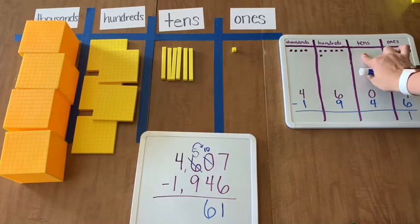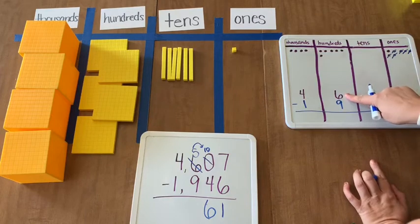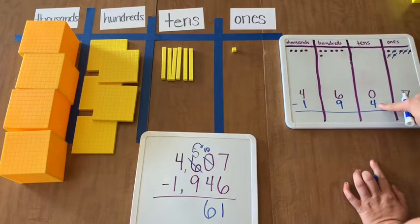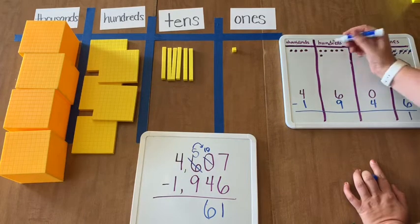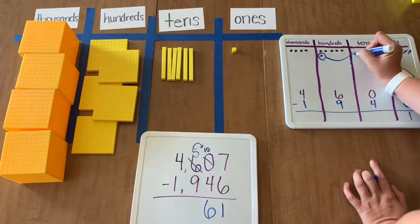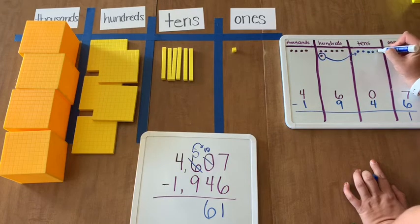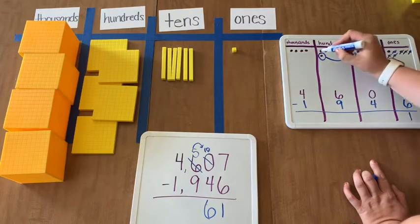Over here in our place value chart, I can do the same thing. I had 0 tens. In order to take away 4, I have to come and regroup one of my hundreds into 10, 20, 30, 40, 50, 60, 70, 80, 90, 100 tens.